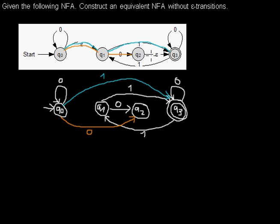Q2 is a special case. You have an epsilon transition from Q2 to Q3, which is a final state. If you read any word and end up in Q2, you can always take the epsilon transition to reach the final state. So this epsilon transition to the final state makes Q2 a final state as well in the new automaton.